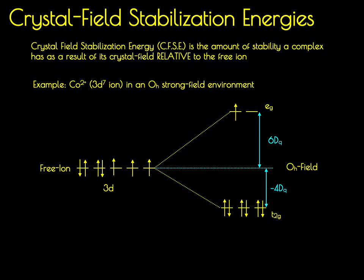Because it's a strong field, six of those electrons are going to fill the T2g orbitals, and then we're going to have one electron promoted up into the Eg set. We can now assign energies of these orbitals relative to the free ion — where we have those five degenerate d orbitals. The T2g orbitals are stabilized by a value of 4dq, and the Eg orbitals are destabilized by a value of 6dq. That means we're going to assign an energy of minus 4dq to each electron in the T2g orbitals and plus 6dq to each electron in the Eg orbitals.